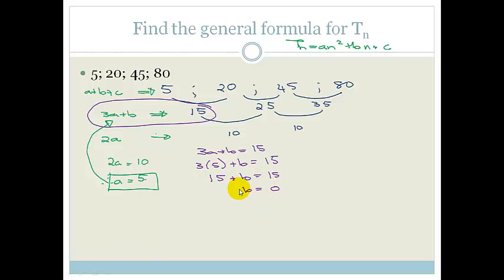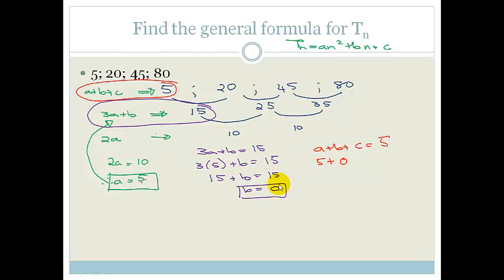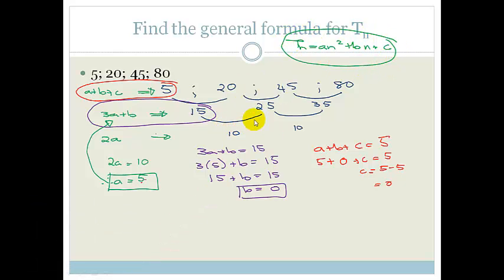Now we substitute a and b into the first term equation: a plus b plus c equals 5. Our a is 5, b is 0, and we want c — so 5 plus 0 plus c equals 5, meaning c equals 0. So our general formula is tn equals 5n squared — a really easy quadratic because both b and c are zero.